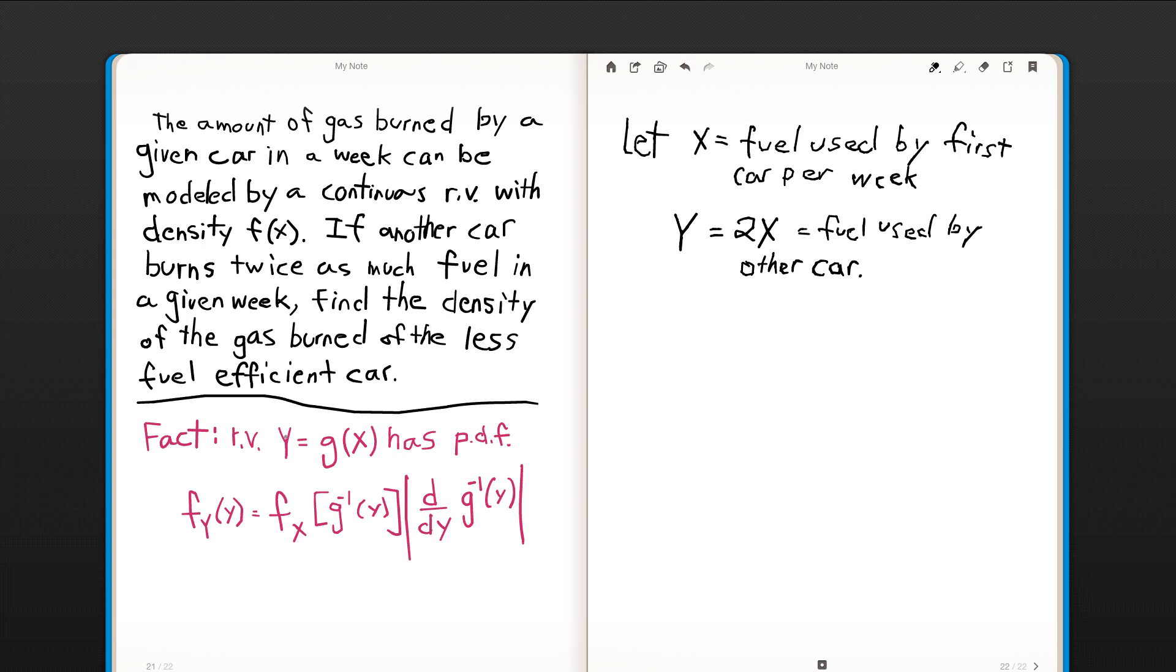Let's go to our fact here. So our random variable y is equal to g(x). So there's our transformation, g(x). So actually, g(x) here is equal to 2x. Which is equal to—that's our y, right?